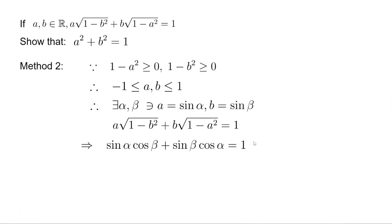Now this looks familiar because this is just the sum formula of sine. So this can be rewritten as sine of alpha plus beta equals 1. Now a sine value is 1, which means the angle itself is a right angle plus or minus 2k pi, right? So alpha plus beta is a right angle, which means sine beta equals cosine alpha.